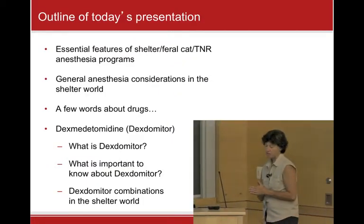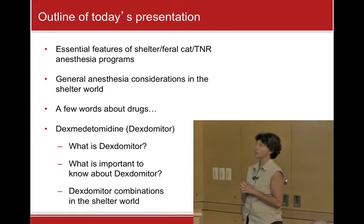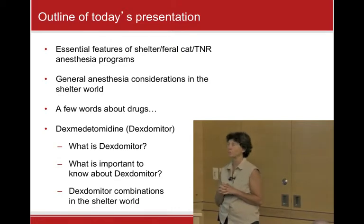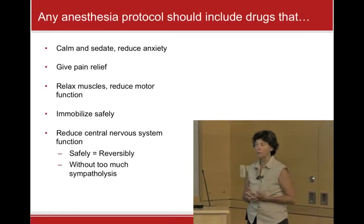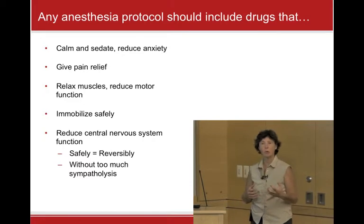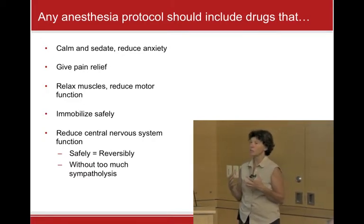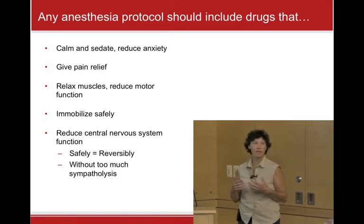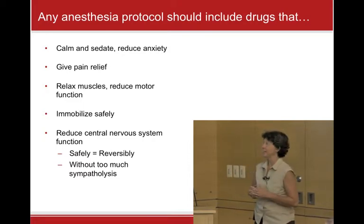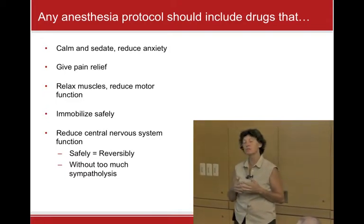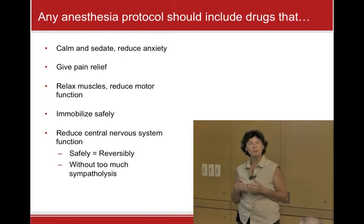I'm going to talk about some essential features of the shelter program, some general anesthesia considerations in the shelter world, and then get on to the drug itself. Any anesthesia protocol, whether it includes dexmedetomidine or not, should give us four or five essential things: it should calm the animal, give pain relief, relax it enough to make the animal immobile so we can work on it, and immobilize safely — reducing central nervous system function reversibly, without permanent impairment.